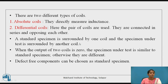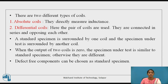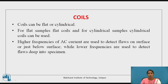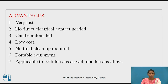There are two types of coils: absolute coils and differential coils. In differential coils, the standard specimen is surrounded by one coil and the specimen under test is surrounded by another. When the output of the two coils is zero, the specimen under test is similar to the standard specimen; otherwise, they are different. The coils can be flat or cylindrical. High frequency AC current is used to detect flaws on or just below the surface. Advantages: they are very fast, no direct electrical contact is needed, they can be automated, low cost, no final cleanup is required, and they are portable and applicable to both ferrous and non-ferrous alloys.